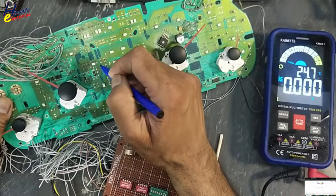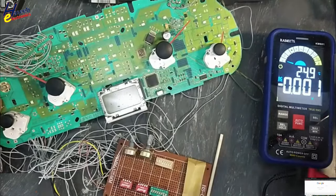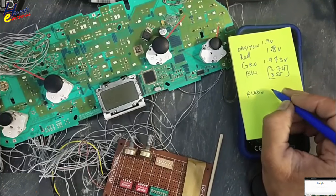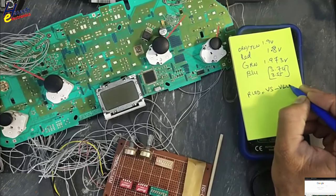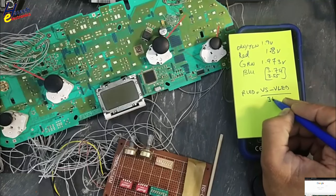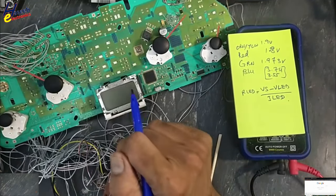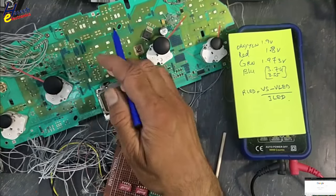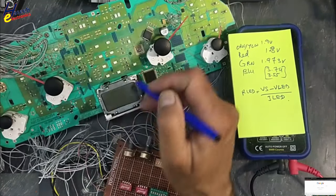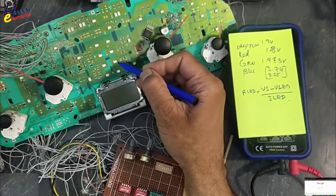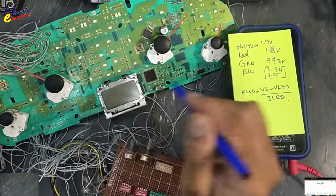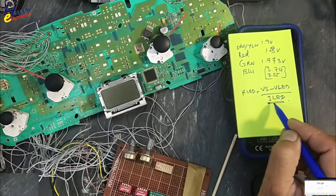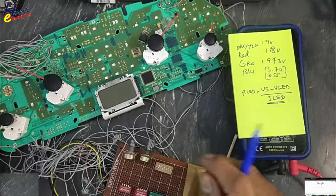If I will use this one, I need to recalculate the resistor value. R LED = V supply minus V LED divided by I LED. Supply voltage 12 volt. LED voltage, if the original LED is 3.7 volt, this one is damaged. I want to use this that is 1.8 volt. 12 minus 1.8 divided by I LED. This amount we will find in the datasheet. Let's check datasheet now.